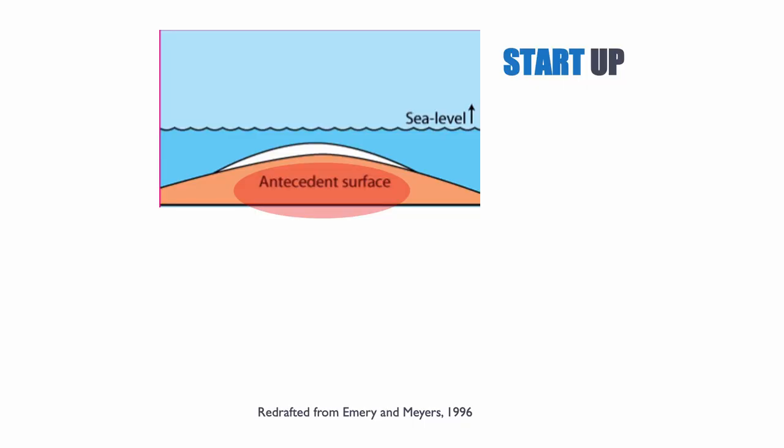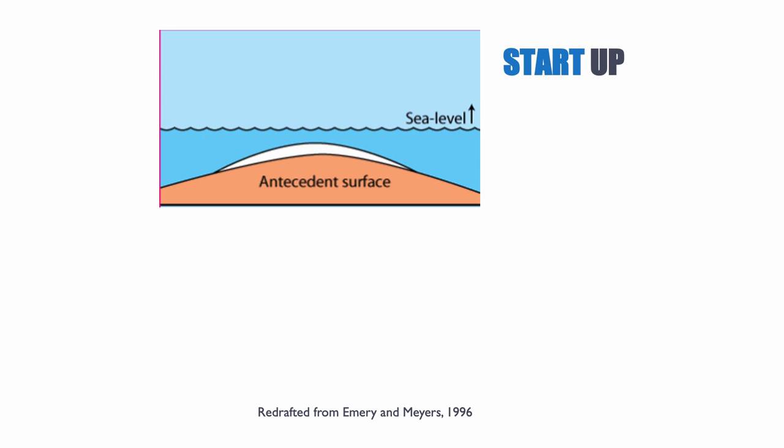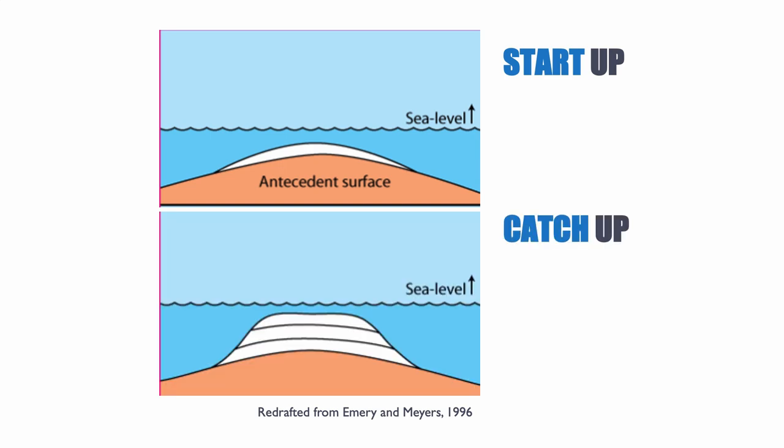Let's look at examples. Imagine we have an antecedent surface — a surface that was exposed, maybe the top of a previous platform or a block of granite. It's a surface that was not available for corals to grow before sea level goes up. This can be a relative sea level change, and we are in what is known as the startup phase, where corals or carbonates start to colonize the top of this surface but don't produce enough to really fill the accommodation completely.